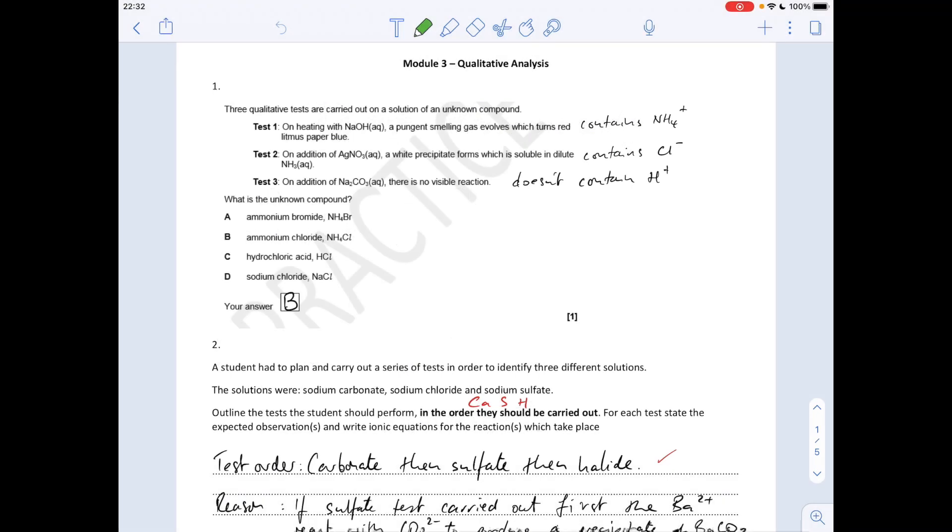Okay, so the first question we've got to process the results of these three tests and decide which is the unknown compound. Test one: they've heated it with sodium hydroxide, a pungent smelling gas evolves which turns red litmus paper blue. That's telling you that it contains ammonium ions.